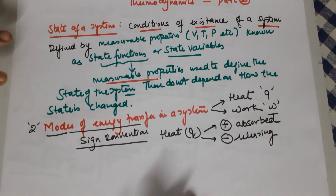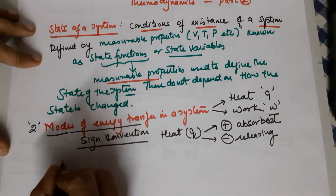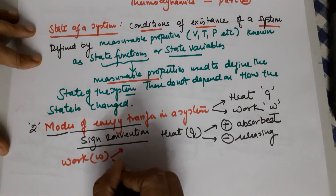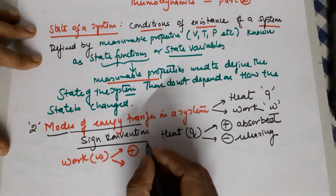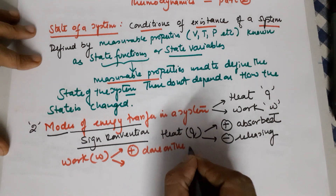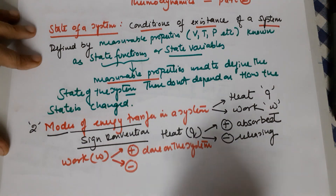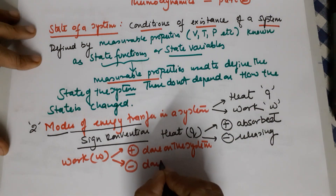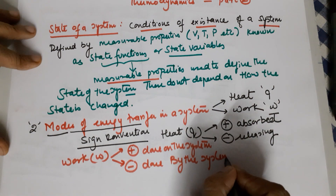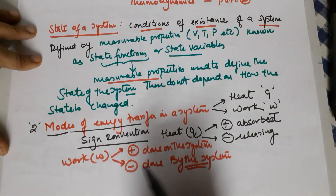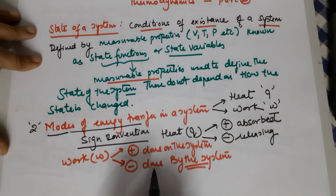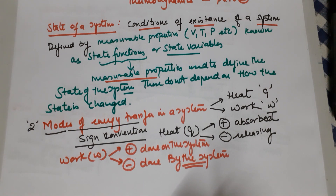Moving on to the work parameter — the sign convention for work (w): positive when work is done on the system, and negative when work is done by the system. If work is done by the system, there is a decrease in energy, which is why we use a negative value. Work done on the system means it is receiving energy (positive); work done by the system means it is expending energy (negative).